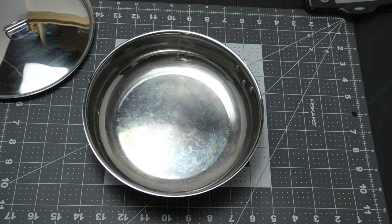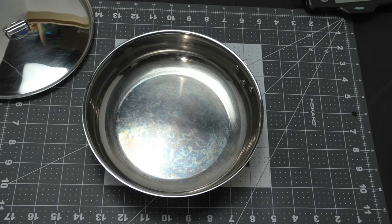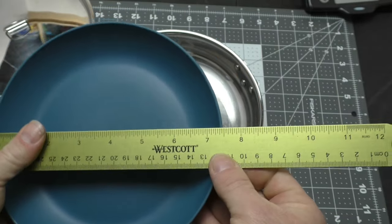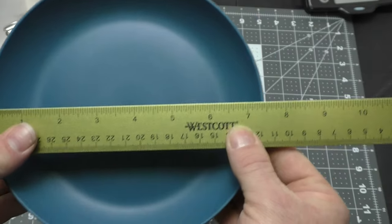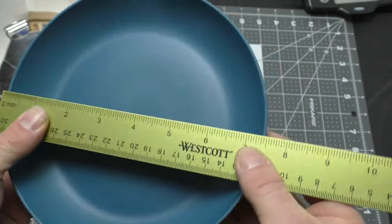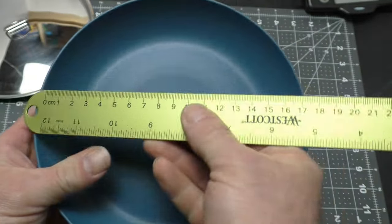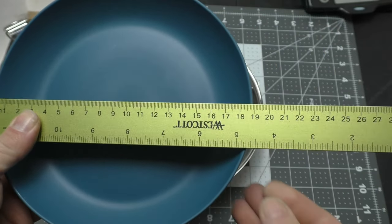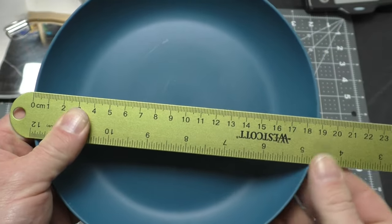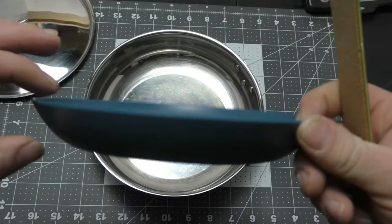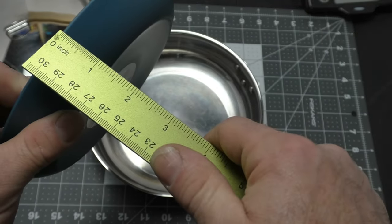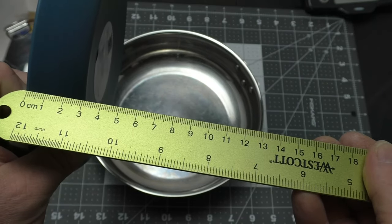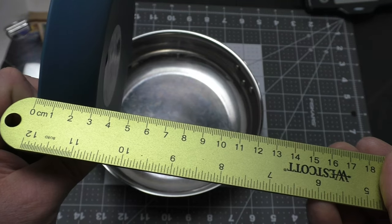Now I can give you some rough dimensions here. Roughly, it's just under seven and a half inches from side to side. Or in metric, we're looking at just under 19 centimeters. It's got a lip and it's about an inch tall or two and a half centimeters, roughly.